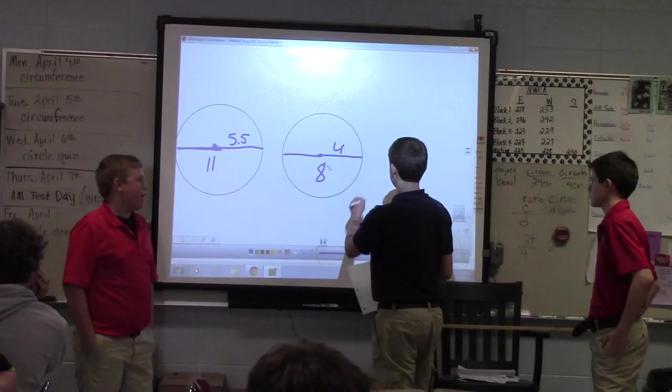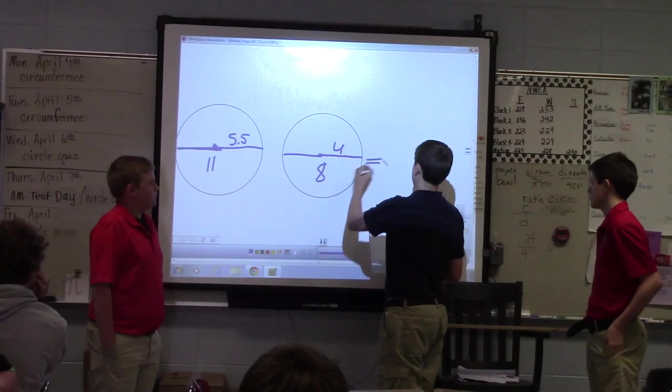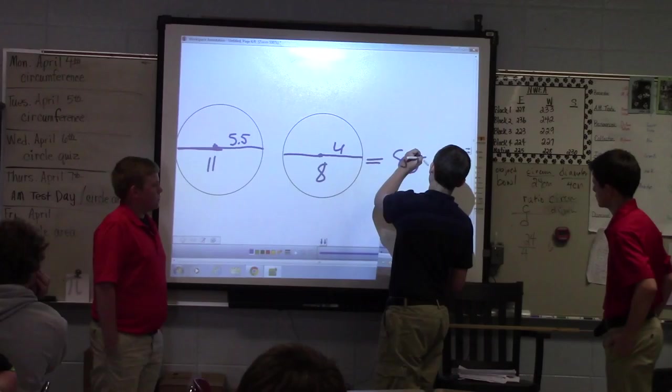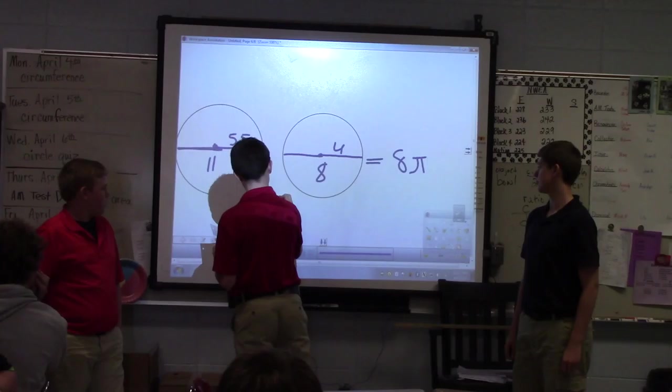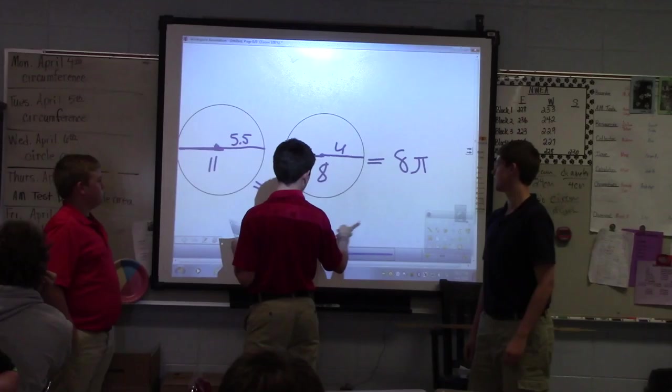All right, for the circumference this would be equal to 8 pi, and the circumference of this would be 11 pi. And both of those added together, I mean 11 subtracted by 8, would give you 3.